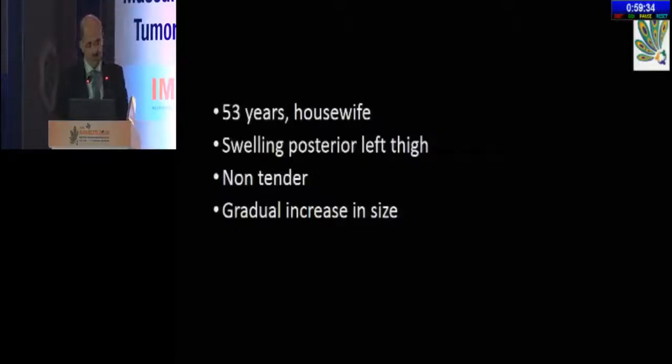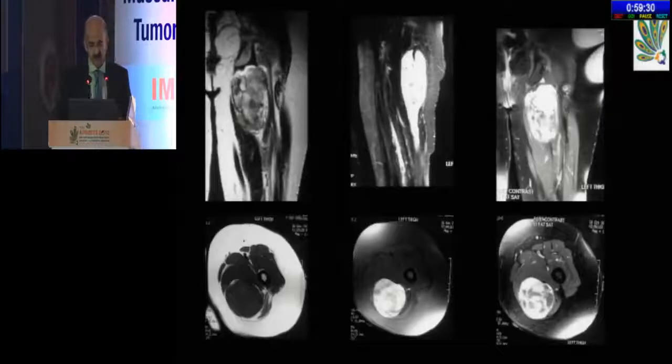This is going to be a case-based discussion. I'll be sharing a few cases — straightforward, simple ones — and having your opinion about what would be the best way or the recommended way of managing these in our clinics and hospitals. The first case is a 53-year-old housewife who presented with a swelling in the posterior aspect of the left thigh, which was non-tender and progressively increasing in size over the last two to three months.